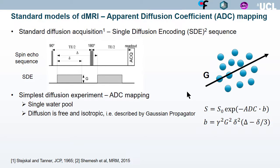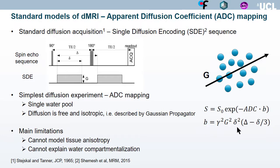The simplest experiment we can do is to map the apparent diffusion coefficient. This requires only one single diffusion measurement, assumes a single water pool, and assumes that diffusion is free and isotropic, described by a Gaussian propagator. The signal can be written as a mono-exponential decay, where B is a diffusion weighting factor depending on the gradient strength and timing of the sequence. The main limitation of the ADC is that it cannot model tissue anisotropy, nor explain water compartmentalization in the tissue.